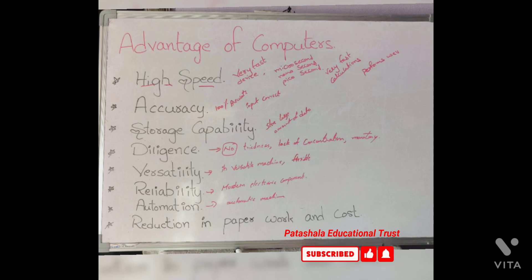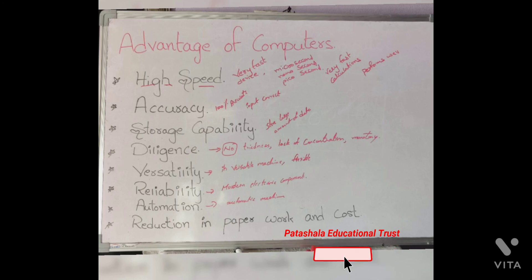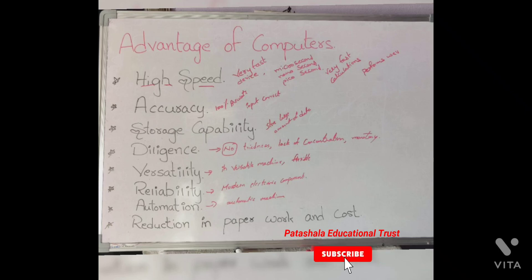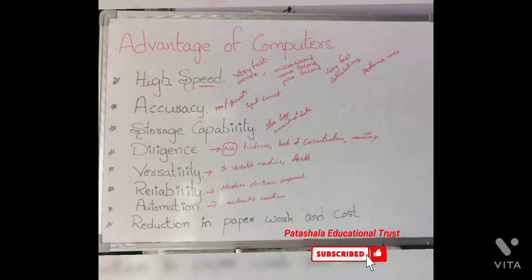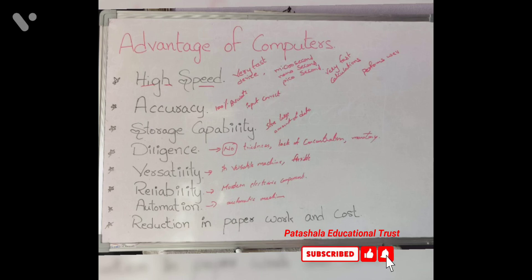What is accuracy? In addition to being very fast, computers are very accurate. The calculations are 100% error free — whatever calculations are done by the computer are 100% error free. Computers perform all jobs with 100% accuracy, provided that the input is correct.